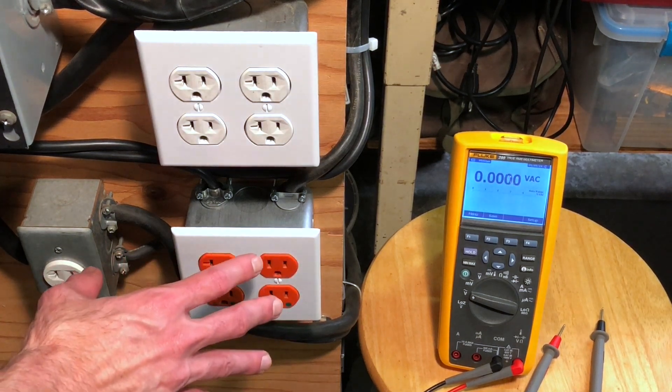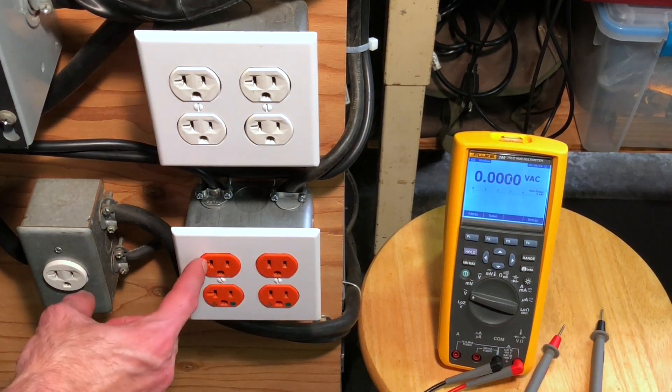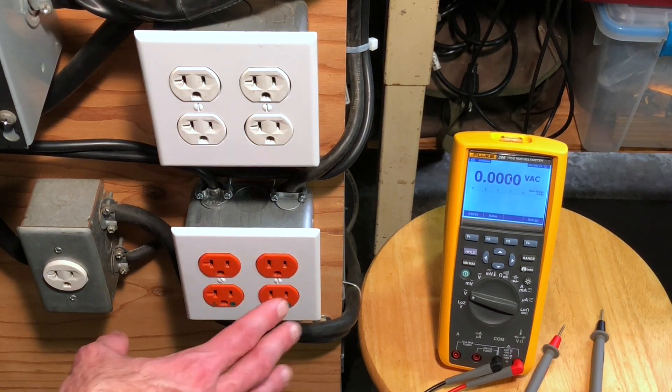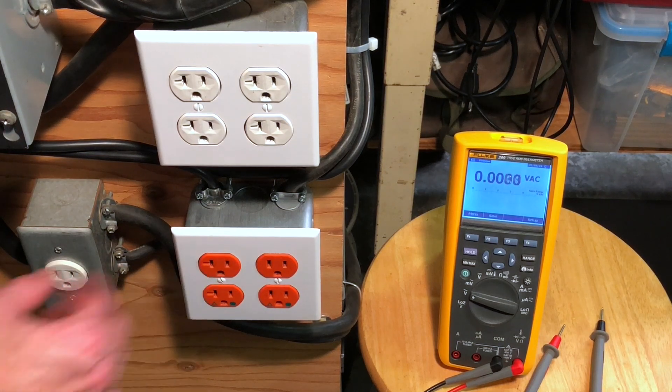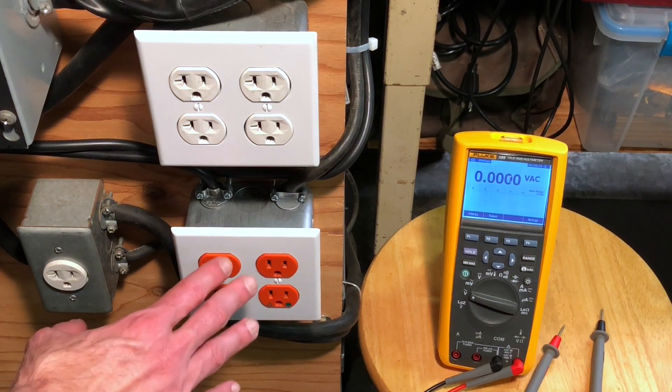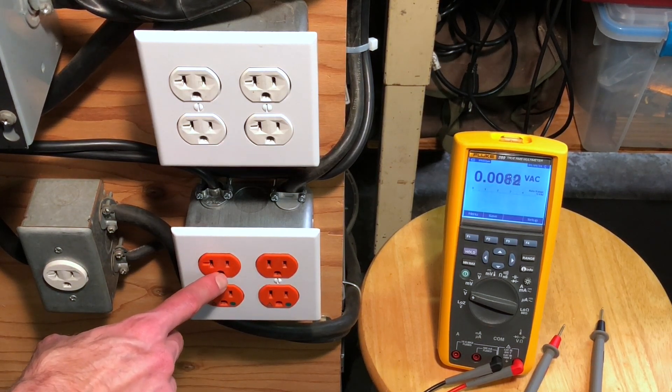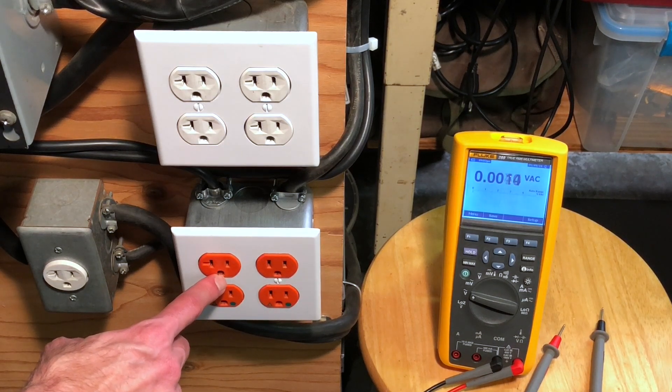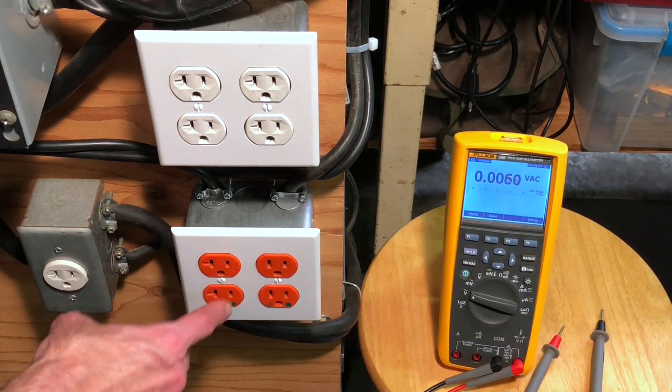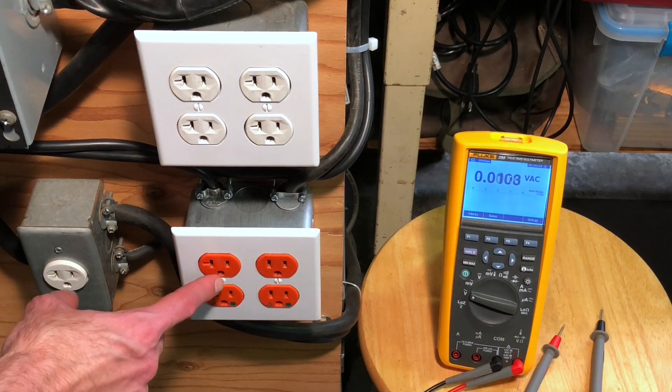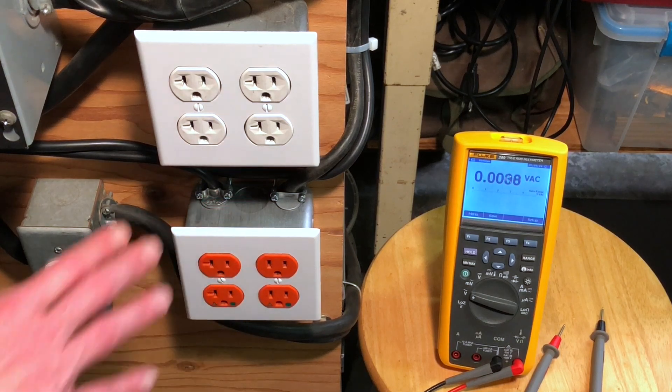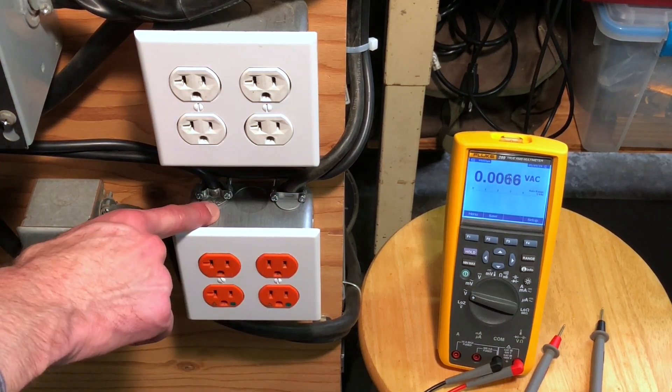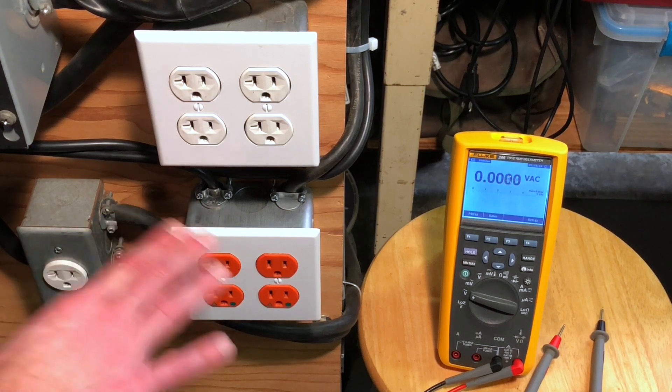Down here, these are all my isolation transformers. There's one transformer on this group and another on this group. The only difference is this is a smaller VA rating transformer. It's not turned on right now, so we'll just use this side over here. They're orange-colored outlets because these are isolated ground outlets, meaning that this little ground socket right here is electrically not connected to the mounting bracket that's part of the outlet assembly.